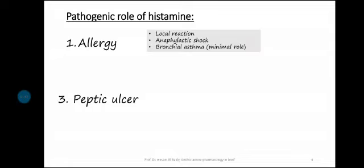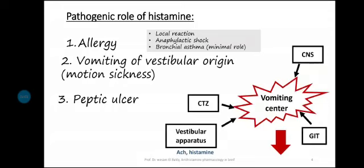The histamine has a minor role — not the main rule. Then there is the histamine role in vomiting of vestibular origin. The vomiting center receives impulses from different parts of the body.